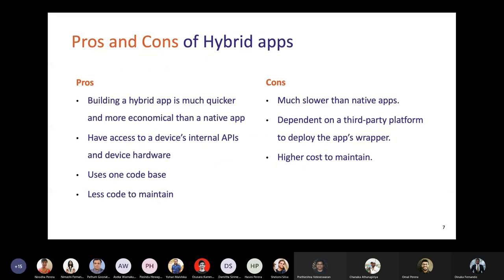Building a hybrid application is much quicker and more economical than a native application, because you manage a single source code and can deploy to both stores. If there is a bug, you just need to fix it in one place. It also has access to diverse internal APIs and device hardware, and you maintain less code since you're using a single code base.